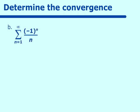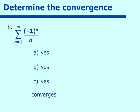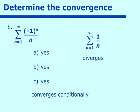Determine the convergence of (-1)ⁿ over n. (A) Terms are positive — yes. (B) Terms are decreasing — yes. (C) Limit goes to 0 — yes. The alternating series converges. But looking at the non-alternating series 1/n, this is the harmonic series where p equals 1, which diverges. Because the non-alternating series diverges but the alternating series converges, we say this series converges conditionally.